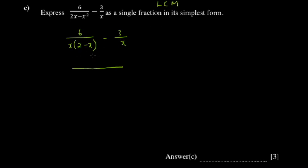The LCM is also called the common denominator, and that's what we want. If we factorize our denominators, we can identify the factors. Sometimes some factors repeat. In our case, the repeating factor is x, and the other factor is 2 minus x.